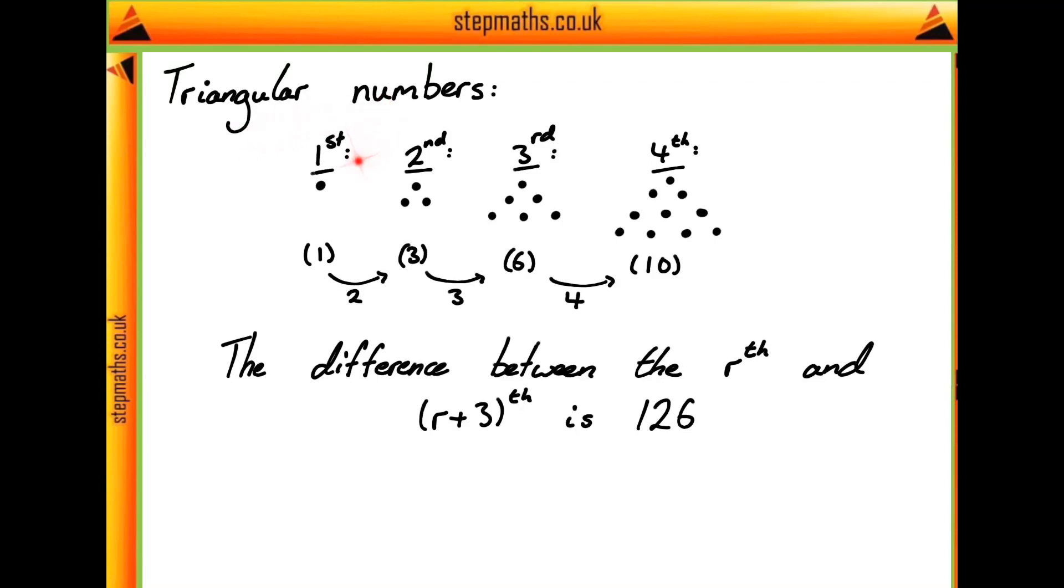We're given some examples of them, with the first being represented by 1, the second by 3, the third being 6, and the fourth being 10. It's shown here as triangular numbers because they make triangles when you put the value of the triangular number out in dots.